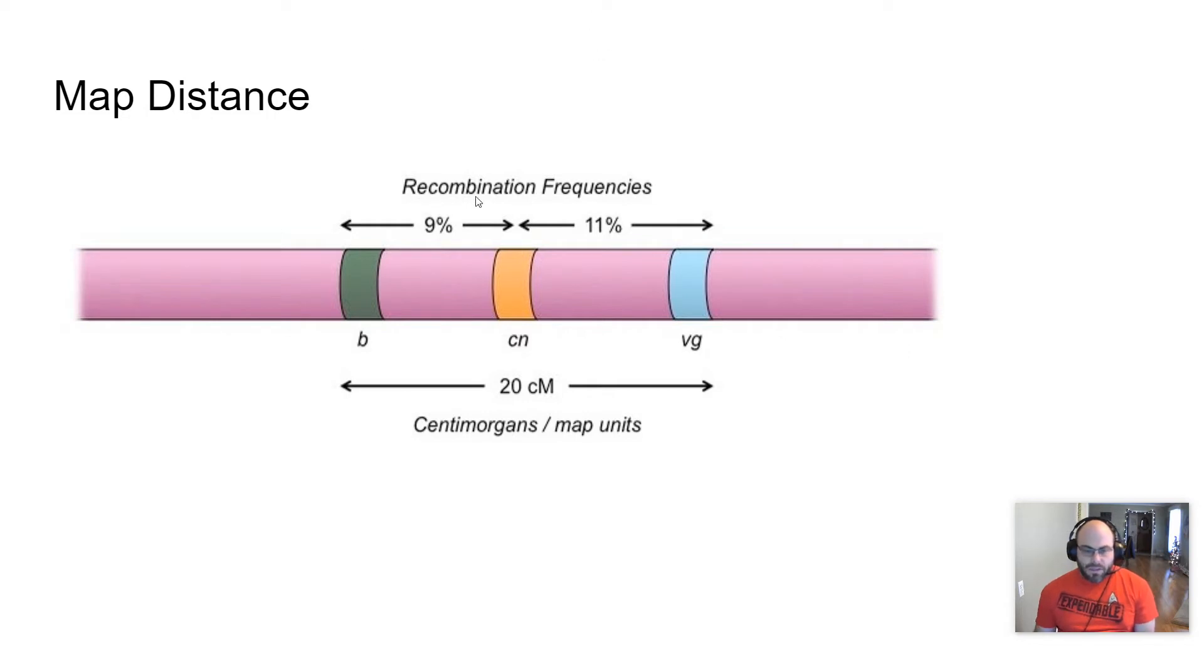This is basically showing you that there is a 9% chance of crossing over happening between these two genes and 11% chance of happening between these two genes. And so the idea is that you can use these percents as just a simple number when you're adding and trying to figure out general percentages. So you could say, what's the chance that B and VG are going to cross over? Well, that's going to be approximately 20%. And so these map units and percentages have to do with one another. They're very closely tied together.